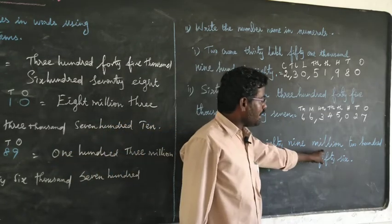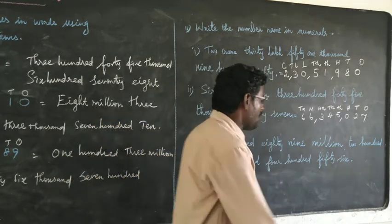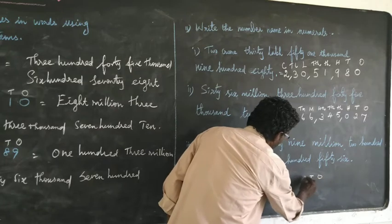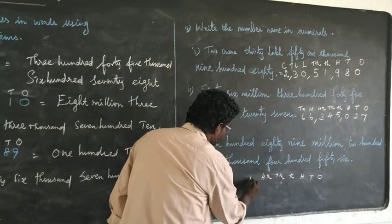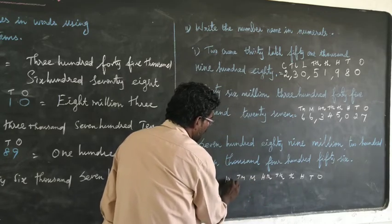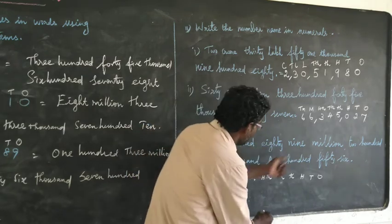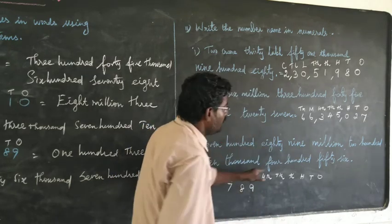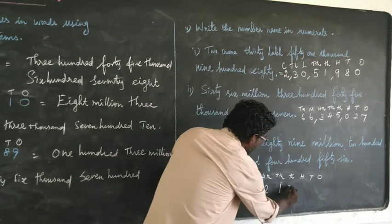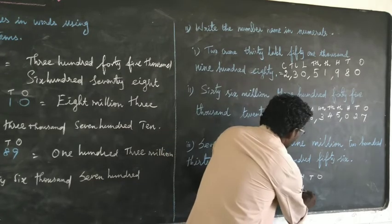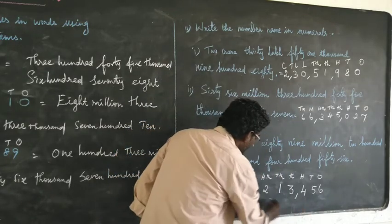Next question: seven hundred eighty-nine million, two hundred thirteen thousand, four hundred and fifty-six. Write the place value chart: ones, tens, hundreds, thousands, ten thousands, hundred thousands, millions, ten millions, hundred millions. How many hundred millions? Seven hundred, so 789 million, two hundred thirteen thousand, four hundred and fifty-six. In international system, put the commas after every three digits.